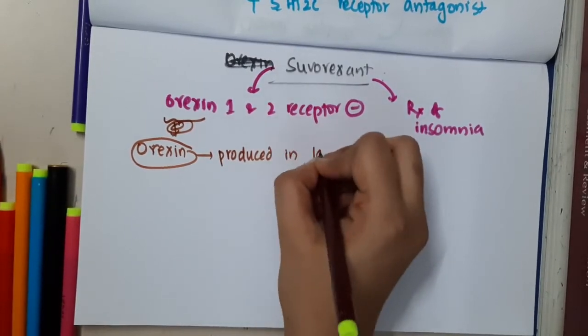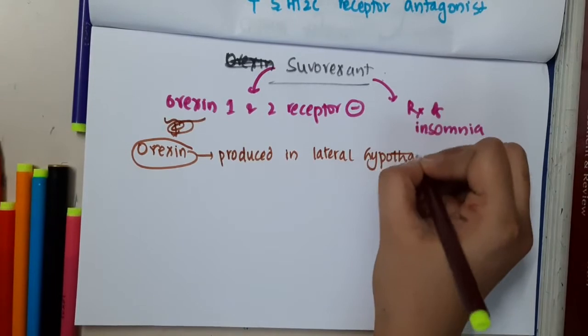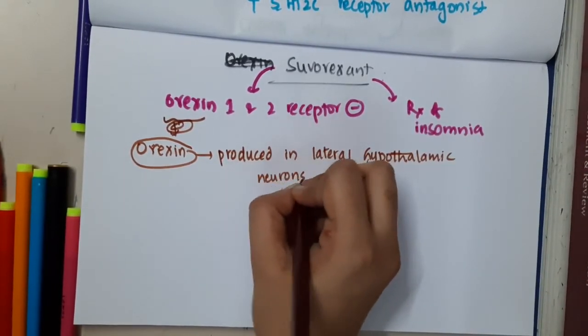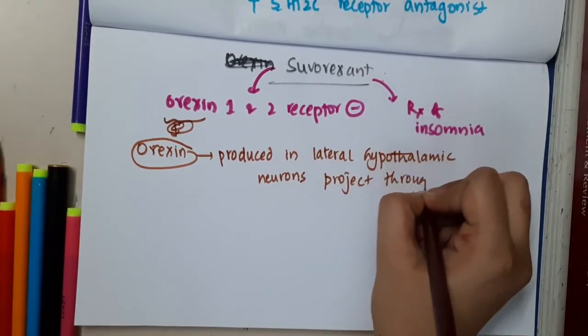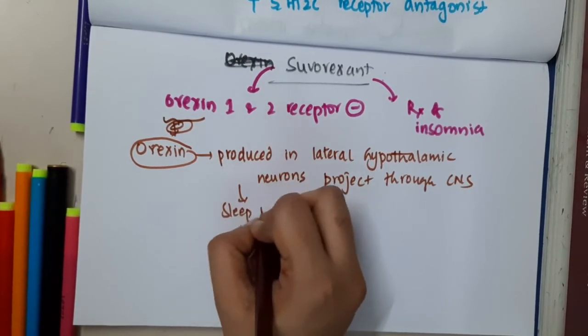They are produced in lateral hypothalamic neurons which project through the CNS and play an important role in the sleep-wake cycle.